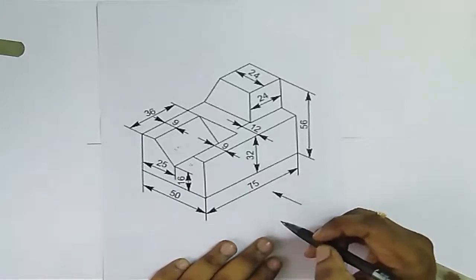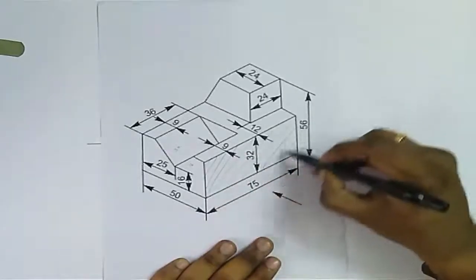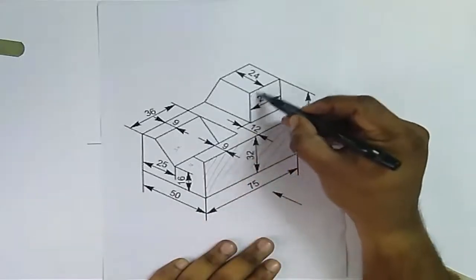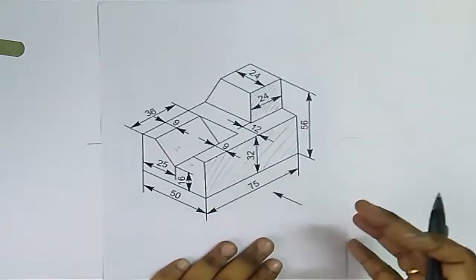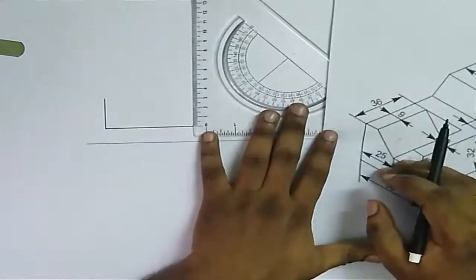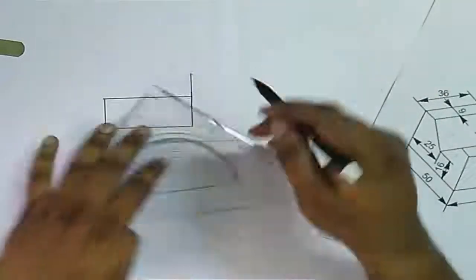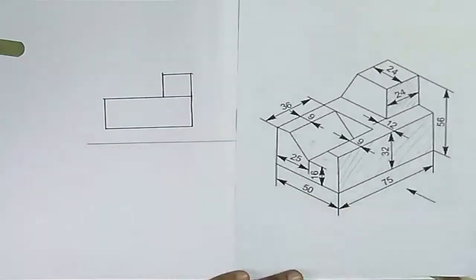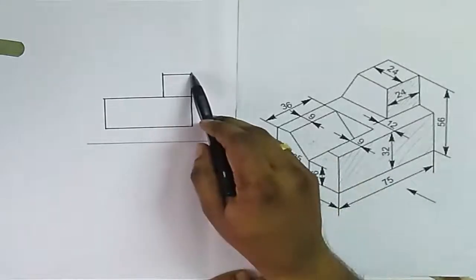This is your front view direction. In the front view, what faces will you see? You can see this face completely — the face with dimensions 75 by 32. Similarly, you can see this smaller face also completely. The size of this smaller face will be 24 by 24. Let me draw this front view first. This face will be 75 by 32, so this line is 75 mm and this is 32 mm. Similarly, this is 24 of height and 24 of width.